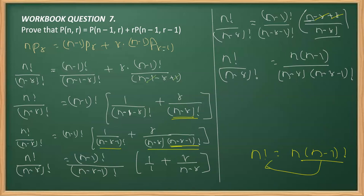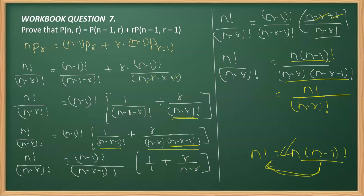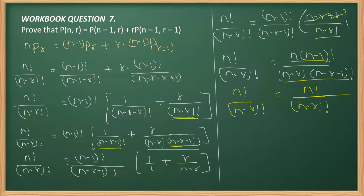I can write n into (n-1) whole factorial as n factorial, applying this in reverse order. Similarly in the denominator, I can write this whole thing as (n-r) whole factorial, applying the same relation. Now keeping the LHS as it is — n! / (n-r)! — you can clearly see that our LHS is the same as the RHS, and this is how the question can be verified.